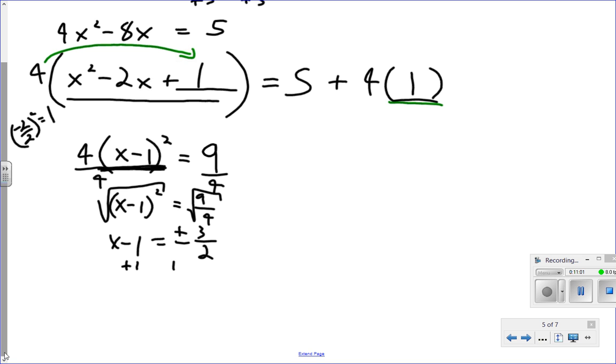Last step, add 1 to both sides. So I get x is equal to 1 plus or minus 3 halves. That's my final answer.